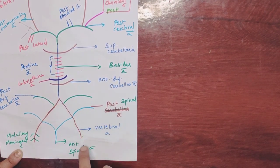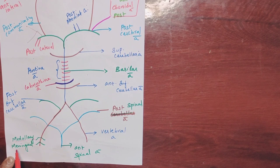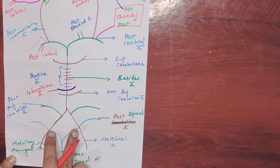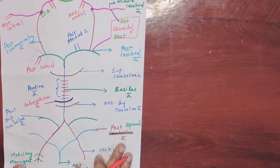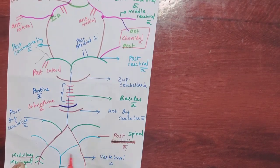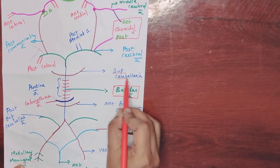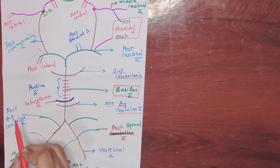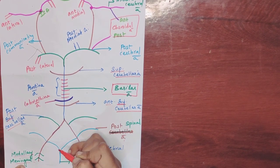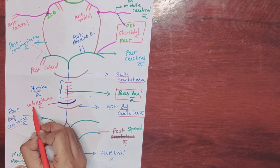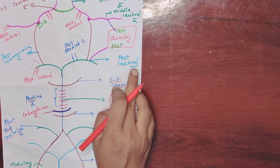To summarize: first, draw the two vertebral arteries. In the vertebral artery, there is a medullary artery and a meningeal artery. The anterior vertebral arteries form the anterior spinal artery and the posterior spinal artery. The two vertebral arteries join to form the basilar artery. In the basilar artery, the important branches are the superior cerebellar artery, anterior inferior cerebellar artery, and posterior inferior cerebellar artery. The basilar artery divides into the left and right posterior cerebral arteries.